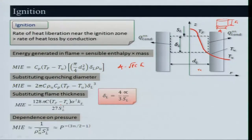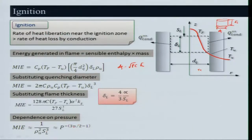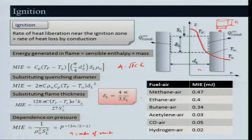Looking at pressure dependence: α = k_g/(ρ_u C_p); k_g and C_p do not change significantly with pressure but ρ_u does. Therefore M_i is proportional to ρ_u² × S_L^q × P^(3n/2 − 1), where n is the order of reaction. For a stoichiometric mixture, minimum ignition energy data for methane-air and other fuels is on the order of millijoules.